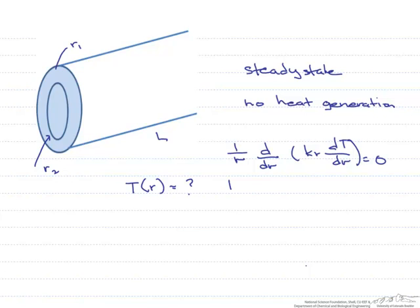The first thing we're going to do is assume that our thermal conductivity k is constant. What that allows us to do is simplify our heat equation even more.